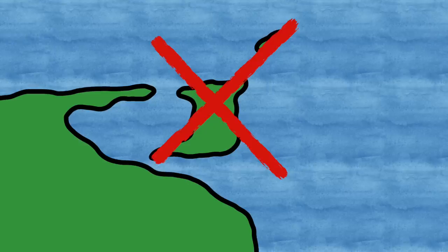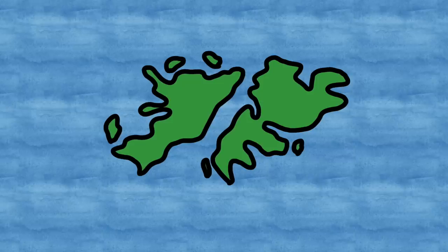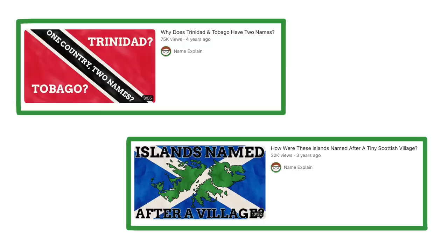For example, Trinidad and Tobago is considered part of North America, despite how close to South America it is. And then we have the Falklands too, which is something of a point of contention. It's just a lot simpler if we stick to what is on continental South America — though if you really want to know about those two in particular, we have whole videos on them.